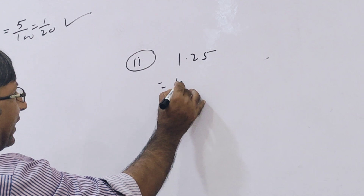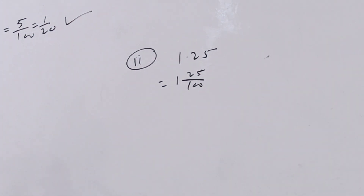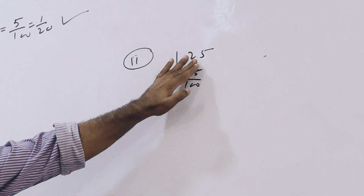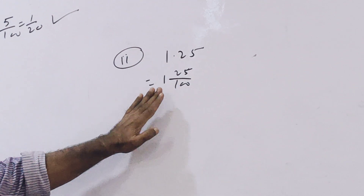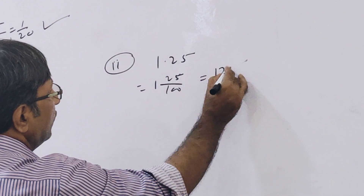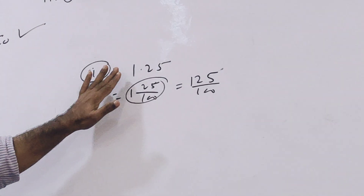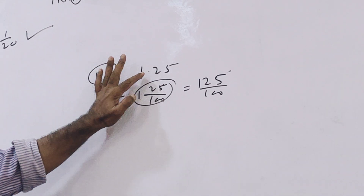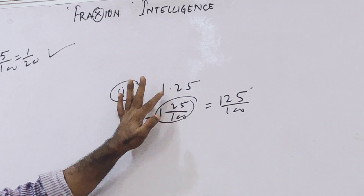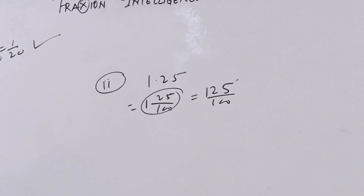You can write 1 and 25/100 as 1 plus 25/100, which equals 100/100 plus 25/100 = 125/100. So directly from 1.25, remove the decimal — after the decimal there are 2 digits so place 2 zeros — giving 125/100.